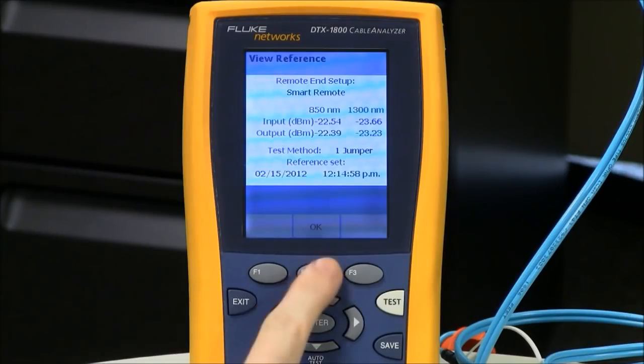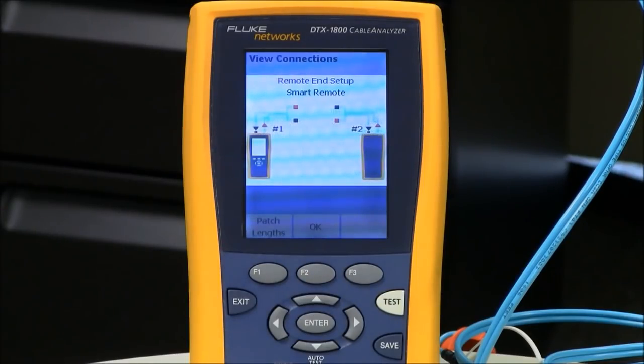So, that said, F2, OK. And above the F1 key, I can actually put the length of the test cords that I'm using in here. It doesn't affect the outcome of the test result, but it will appear on the test report itself. F2, OK.